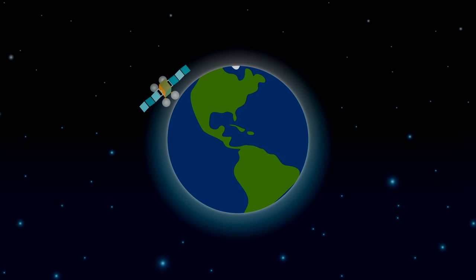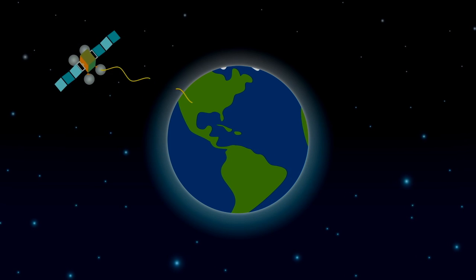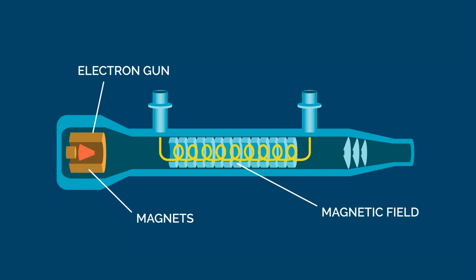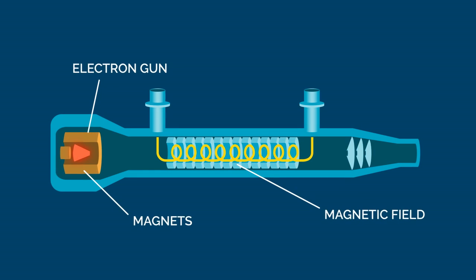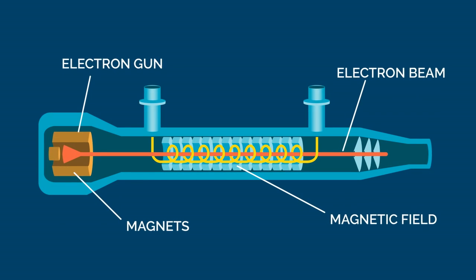Satellites also use energy-packed waves, called microwaves, which send signals from space to Earth until they hit the TV in your home. These waves are formed by powerful devices inside the satellite that create and send out electromagnetic radiation.